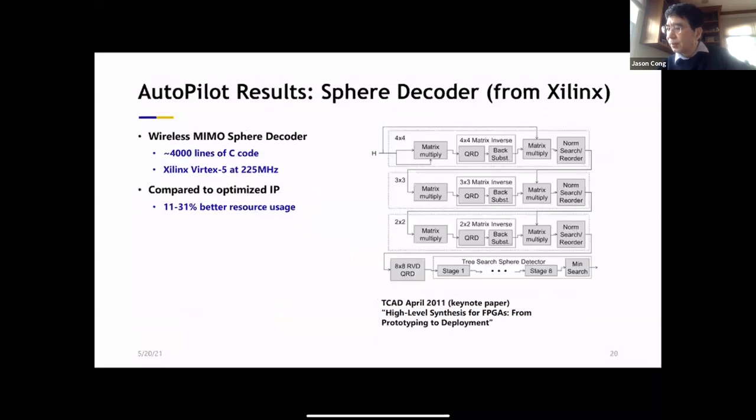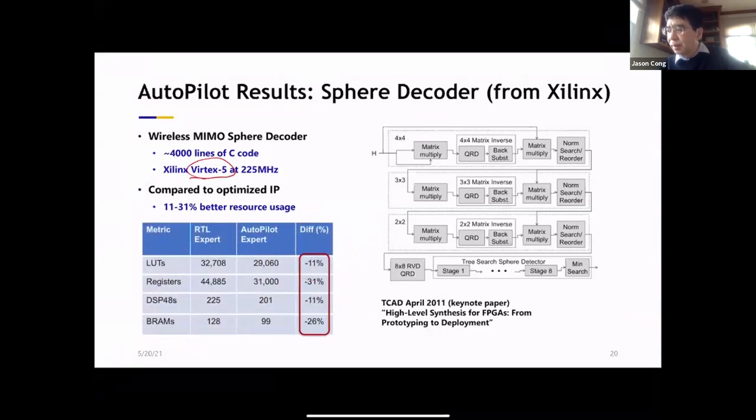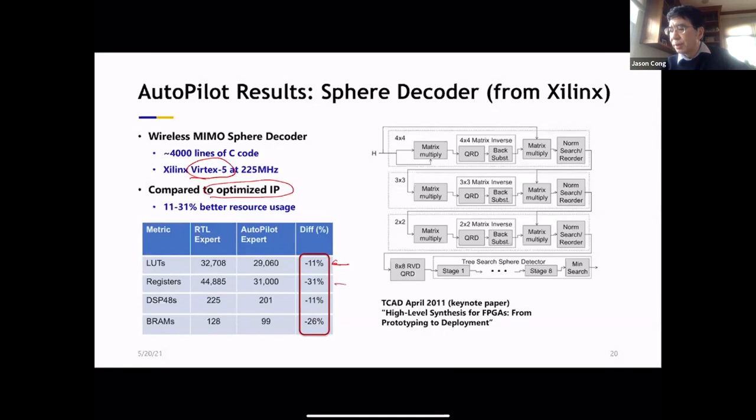So here are some of the results. Before Xilinx made the acquisition, they did extensive testing. For example, they took a wireless MIMO sphere decoder. This is a 4,000 line C code. And at that time, the leading FPGA was Virtex-5. They wanted to run at 225 MHz. So they used high-level synthesis versus manually designed RTL IPs. If you look at this comparison, actually, in this case, FPGA using high-level synthesis wins in terms of both the lookup table registers and the DSPs and the BRAMs. So this is definitely a very successful example.